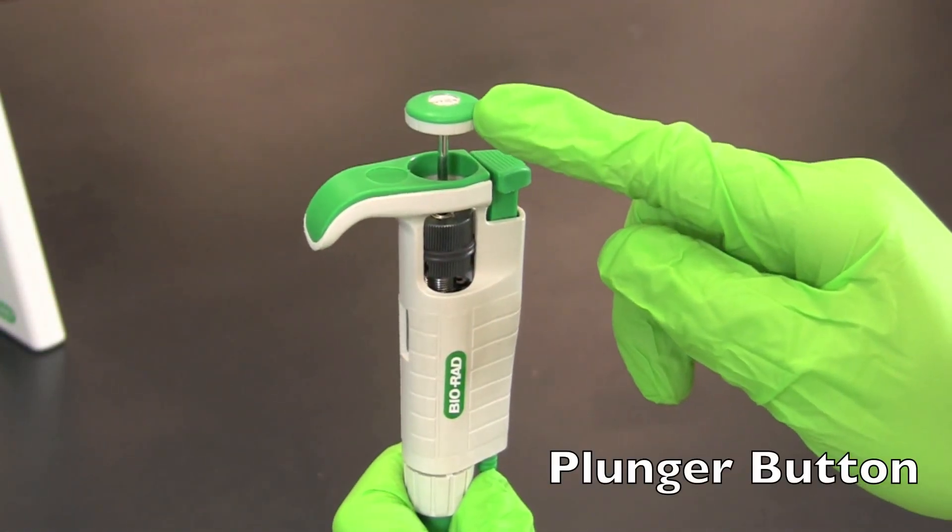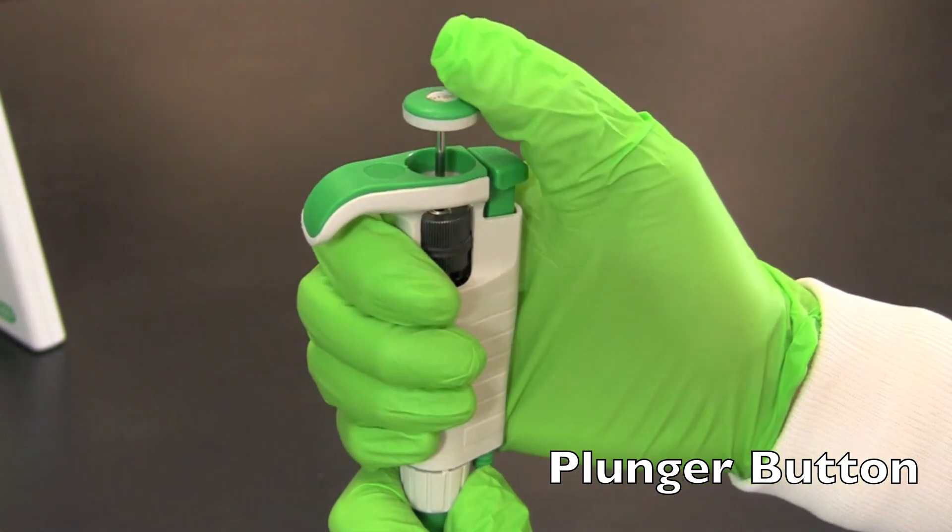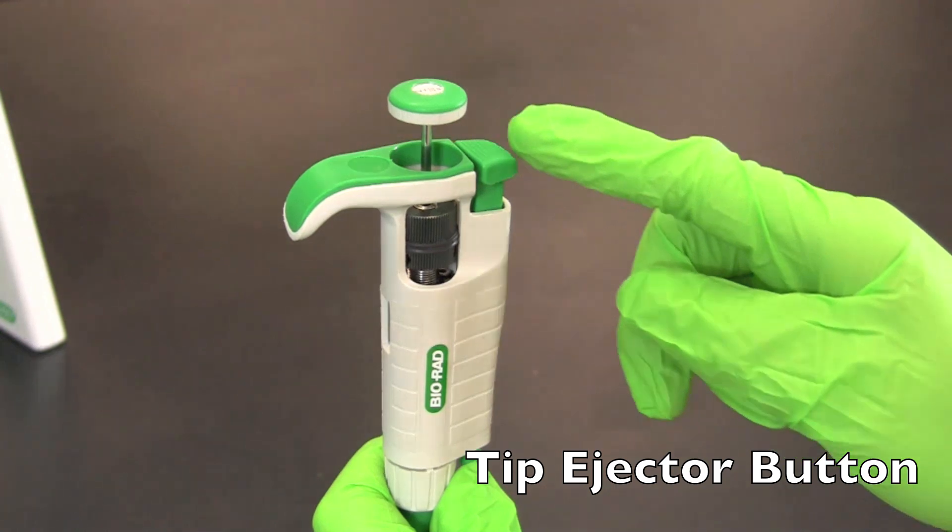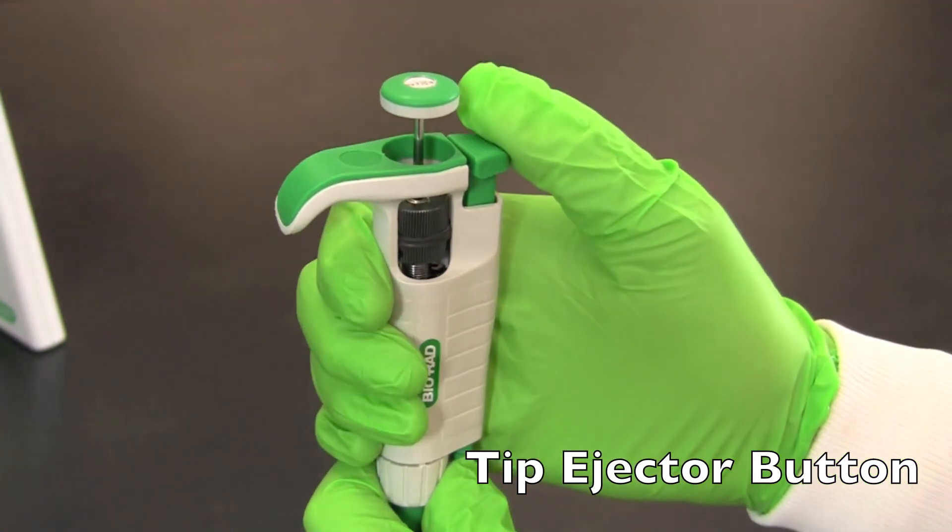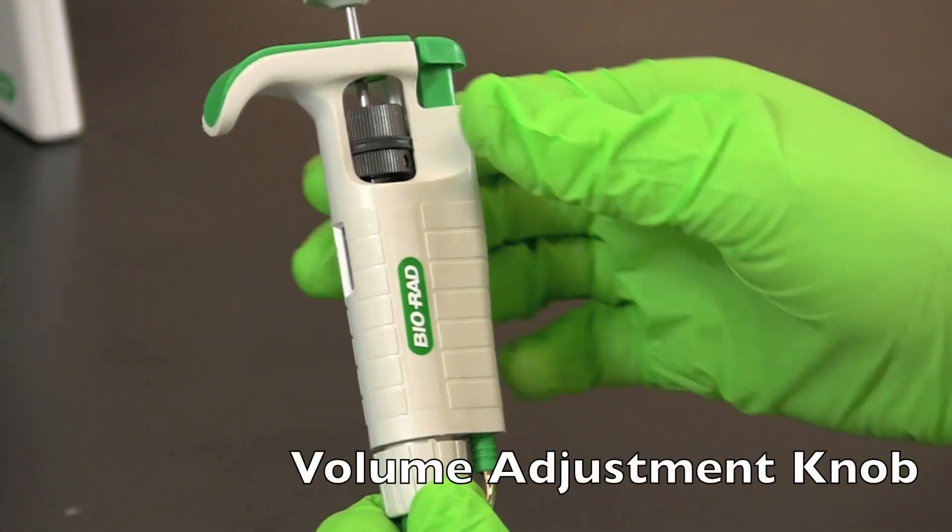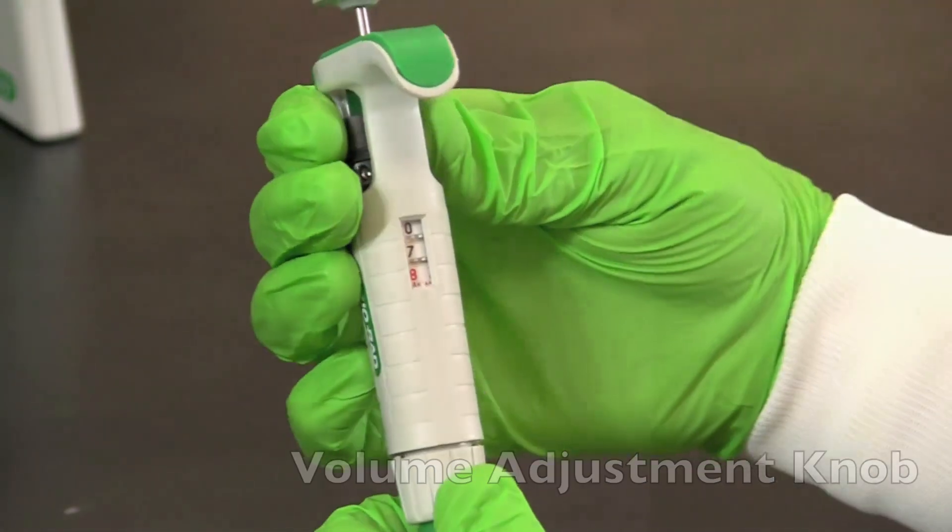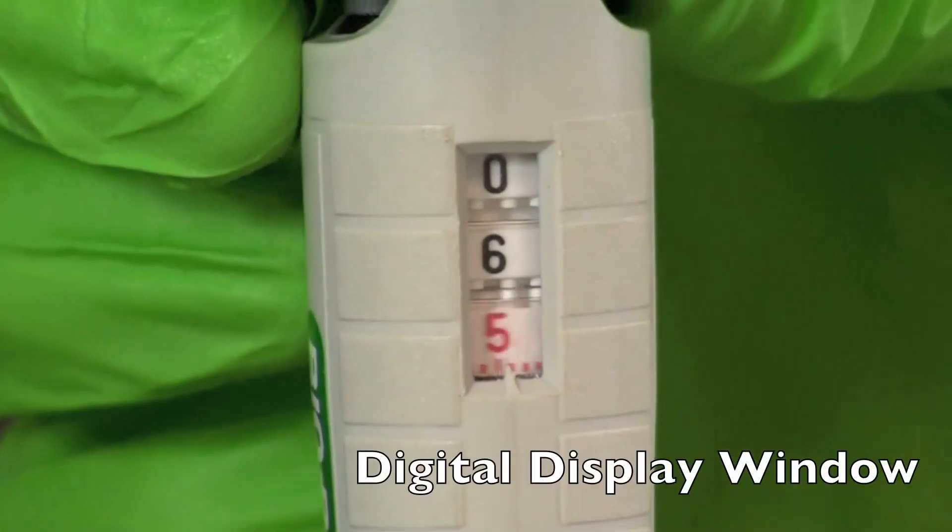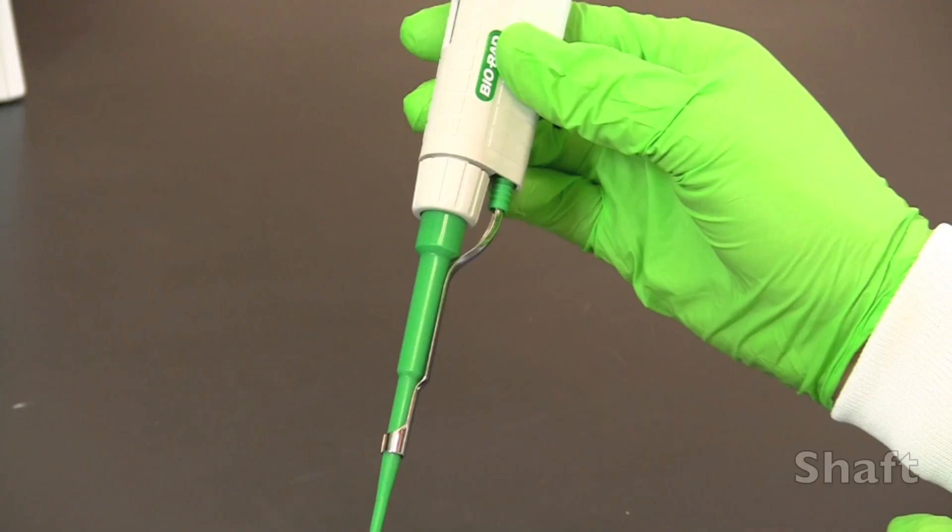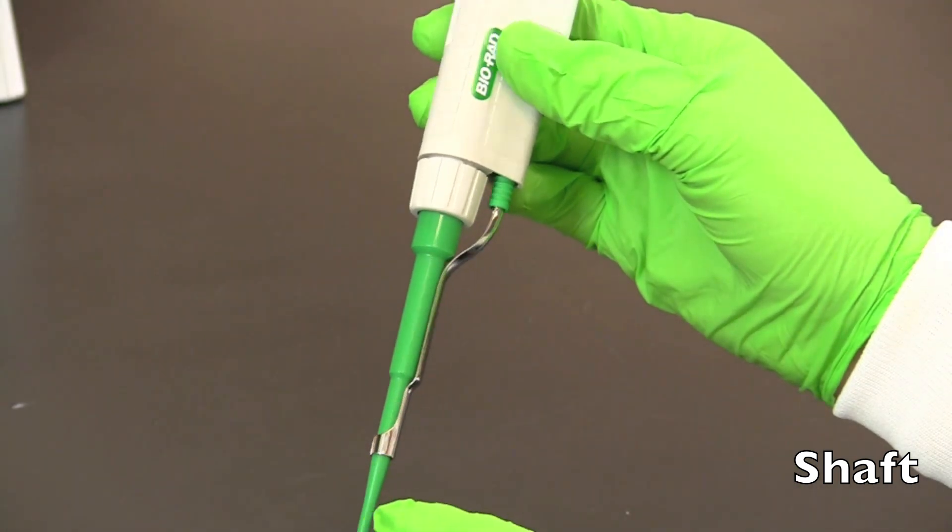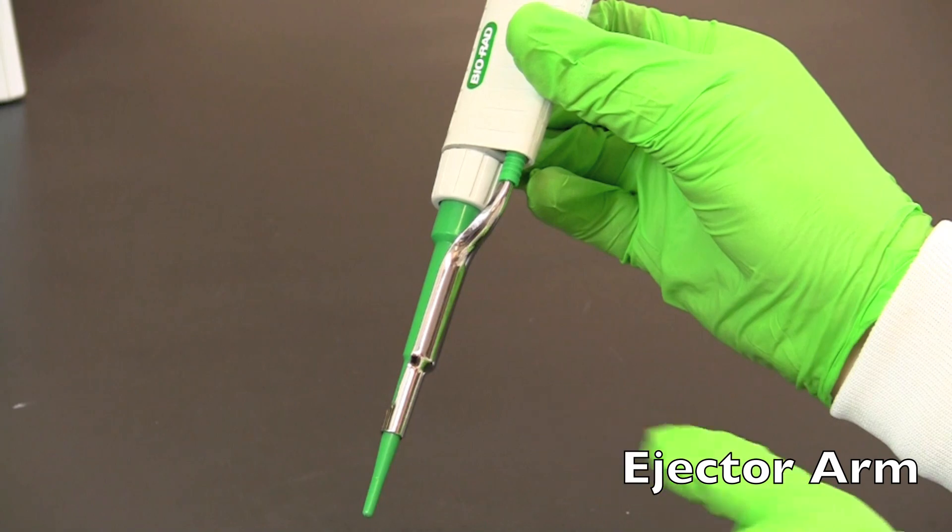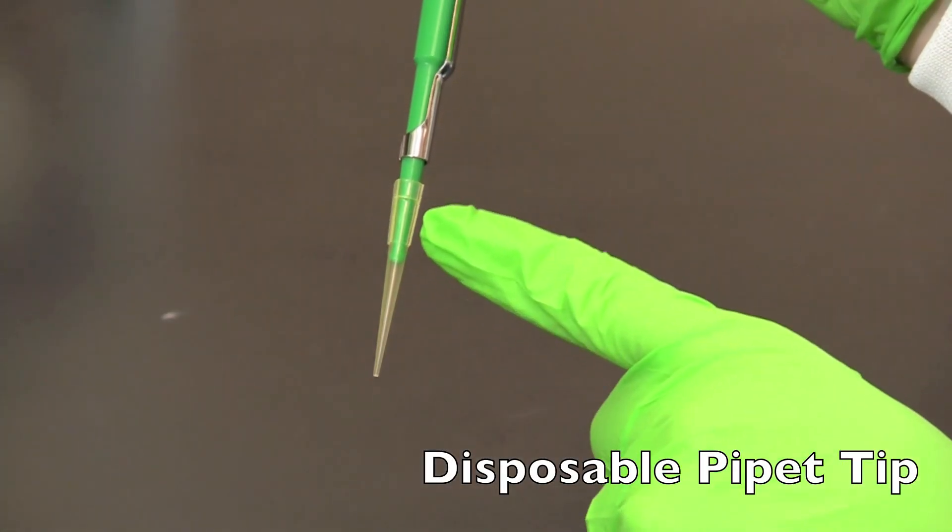The parts of a micropipette include the plunger button used to fill and dispense samples, the tip ejector button used to remove used tips, the volume adjustment knob used to adjust the volume you wish to transfer, the digital display window that displays the volume being selected, the shaft, the ejector arm which ejects used tips, and a disposable pipette tip.